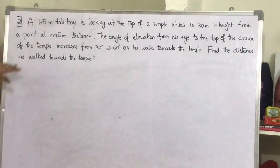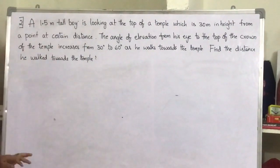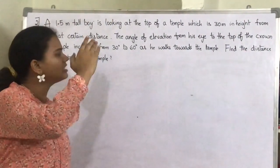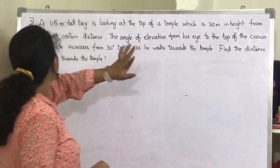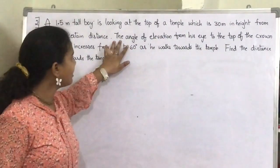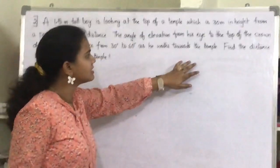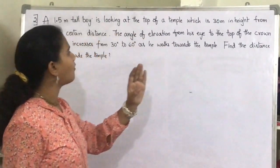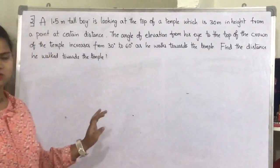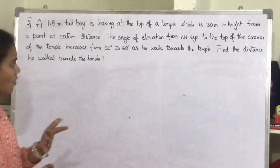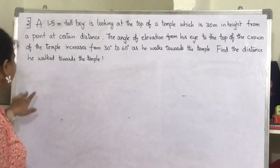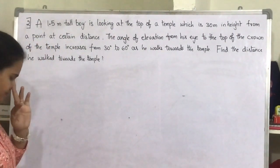Here you have: a 1.5 meter tall boy is looking at the top of the temple which is 30 meters in height from a point at a certain distance. The angle of elevation from his eye to the top of the crown of the temple increases from 30 degrees to 60 degrees as he walks towards the temple. Find the distance he walked towards the temple.